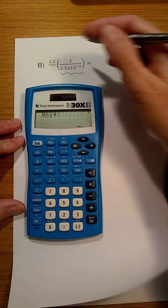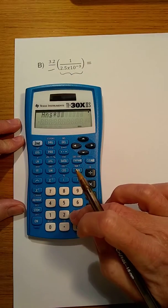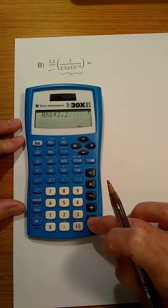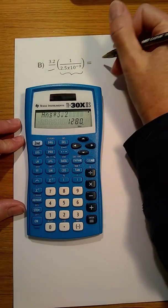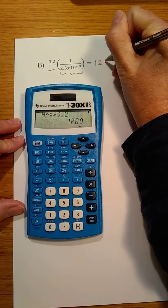Then we multiply that by the 3.2. Hitting enter again gives us the answer to our calculation, which is 1280.